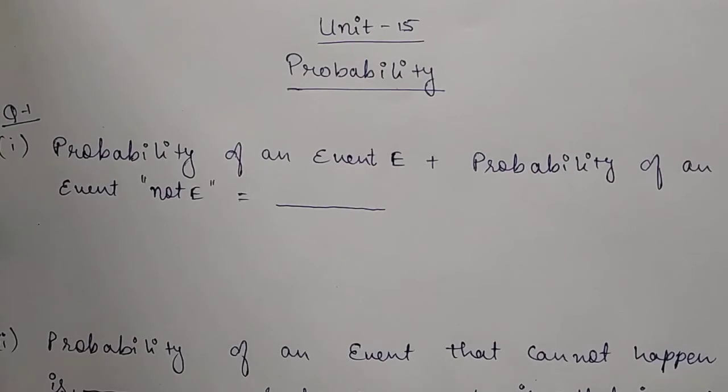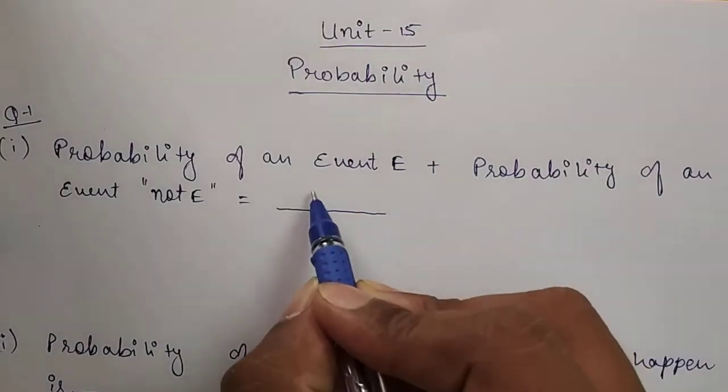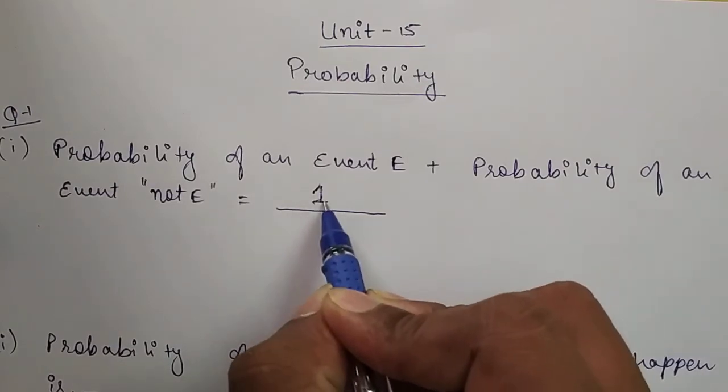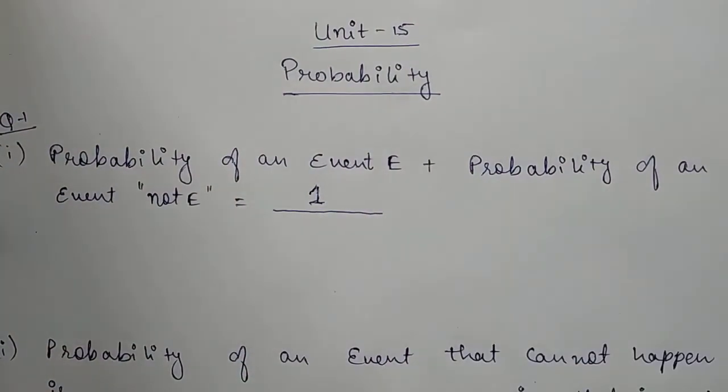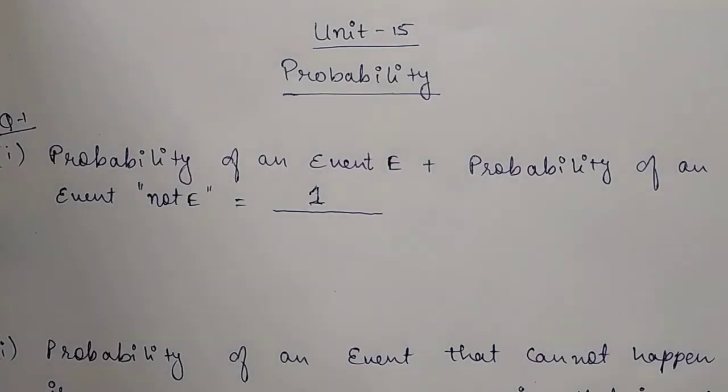If I add the chances of an event happening and the chances of that same event not happening, what answer will we get? Always remember this is going to be 1. Whenever I add the probability of an event happening and not happening, the answer will always be 1. Complete probability is always 1.